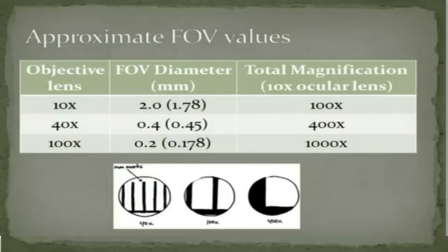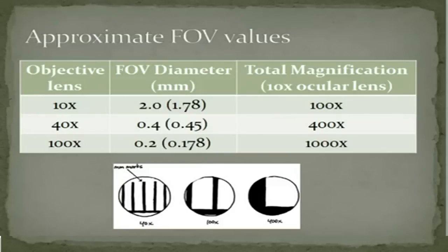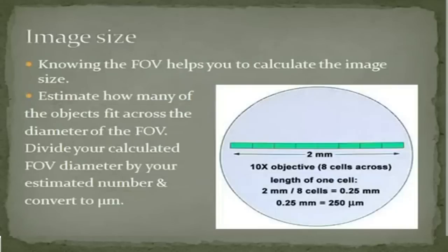As a rough rule of thumb — assuming you have a 10x ocular lens, which you should double-check as not all school microscopes have this — if your objective lens is 10x, your field of view is approximately 2 millimeters. If you're using the 40x lens, your field of view is approximately 0.4 millimeters. And if you're using 100x, your field of view is approximately 0.2 millimeters. That's a rough guide to the sizes of your field of view.